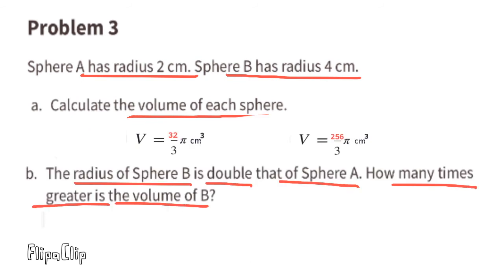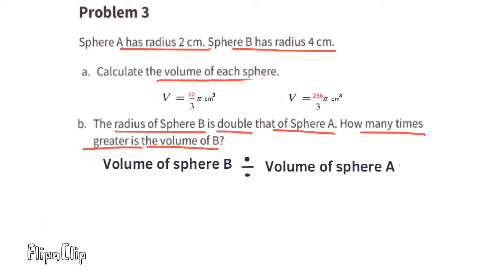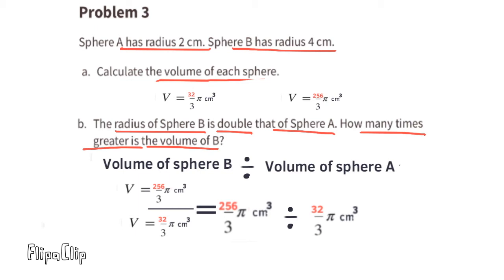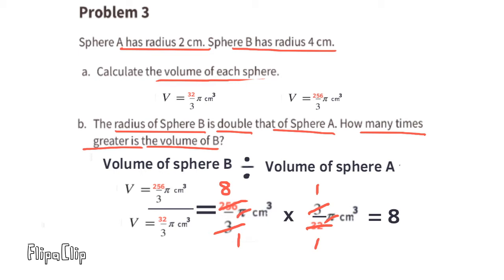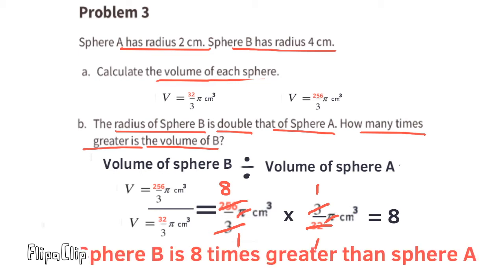Part B: the radius of Sphere B is double that of Sphere A. How many times greater is the volume of Sphere B? Dividing the volume of Sphere B by the volume of Sphere A, and multiplying by the reciprocal, we can cross-cancel: 3 into 3 once, 32 into 32 once, and 32 into 256 eight times. Sphere B has a volume that is 8 times greater than Sphere A.